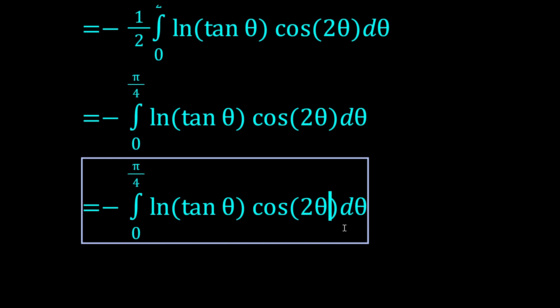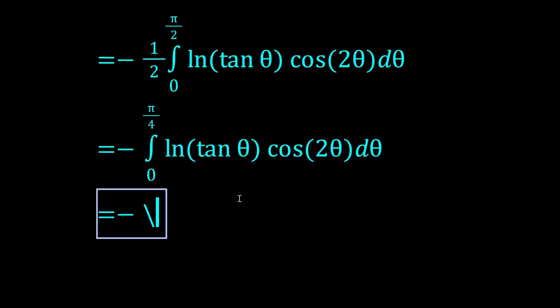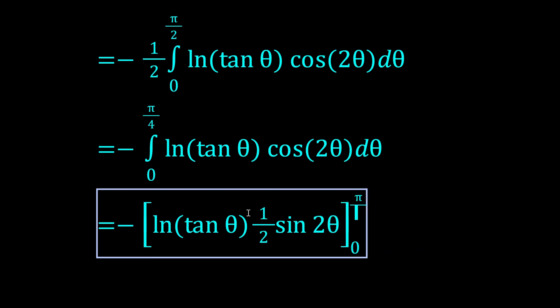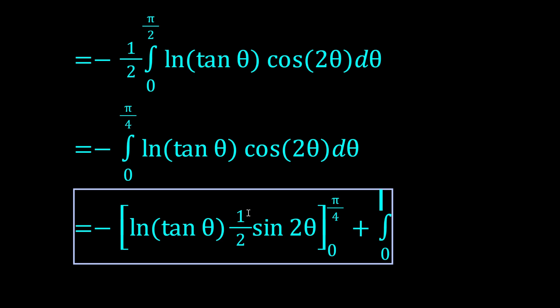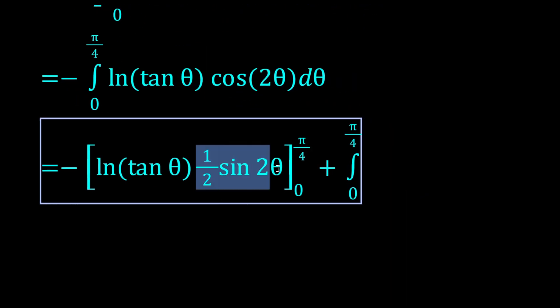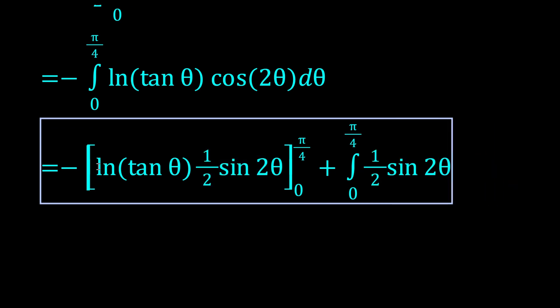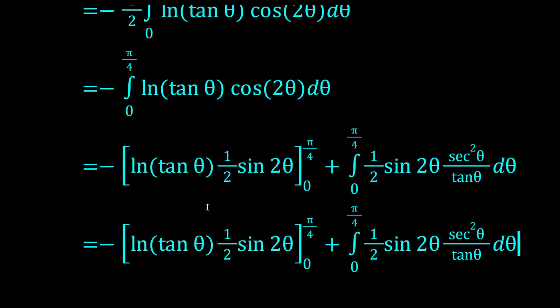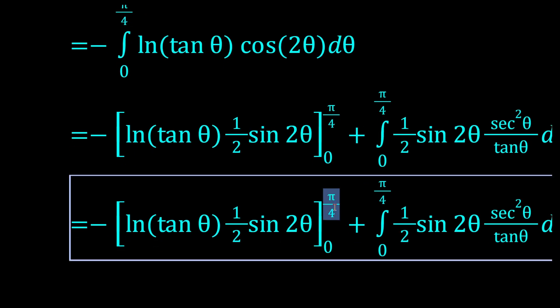Now we could do integration by parts. So we're going to integrate the cos 2θ and keep the log and differentiate it. So keep the log and integrate the cos 2θ would be ½ sin 2θ. And we have to minus the integral. Well, we have a minus sign. So it would be plus the integral from 0 to π/4. Okay, so we just transfer this ½ sin 2θ, and we transfer the log, but when we transfer it, it becomes the derivative actually. So it would be 1/tan θ times sec² θ dθ.